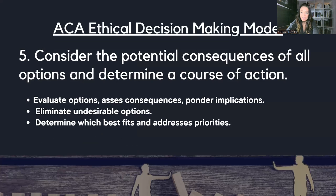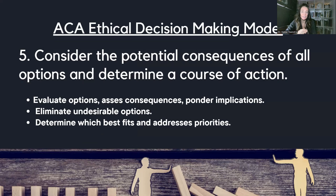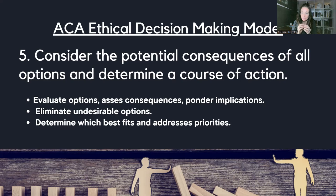Once you've got all those solutions, step five is to consider the potential consequences of all those options and determine your course of action. I like to think of this as a process of elimination. Evaluate each option, think about what consequences and implications could come, and start eliminating the undesirable ones until you arrive at the best fit for your scenario.